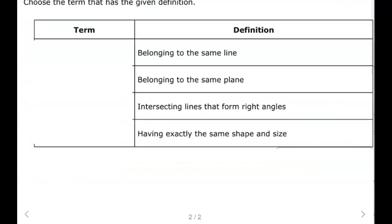Now there are some other ones you might see. Belong to the same line - we've already talked about that, that's collinear. Belong to the same plane would be coplanar. Intersecting lines, that's again perpendicular lines. Having the exact same shape and size, that's congruent.